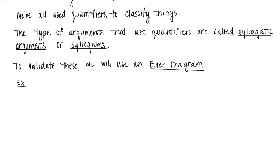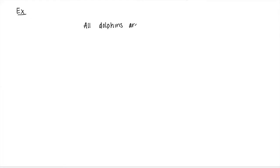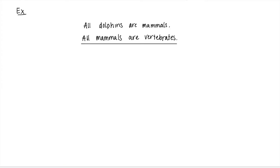I'm going to do an example to walk through what this represents. We're going to do one that hopefully you think would have a natural conclusion. So if I tell you all dolphins are mammals and all mammals are vertebrates, the conclusion you can hopefully see has to follow is: all dolphins are vertebrates.